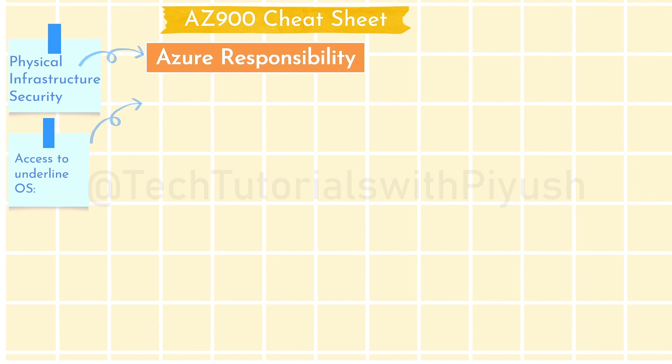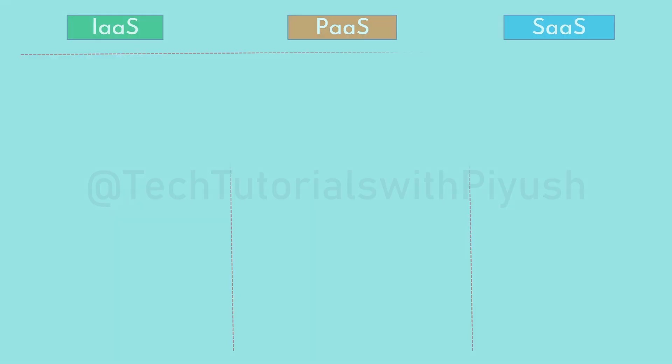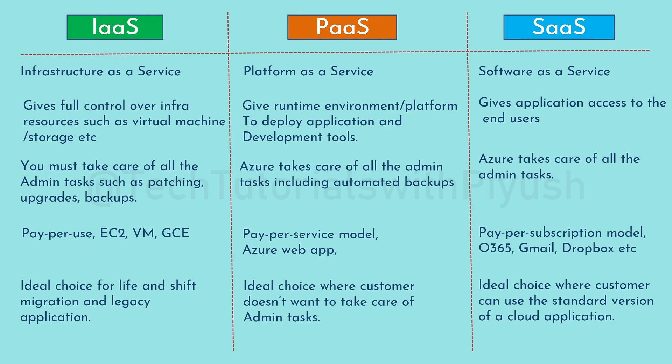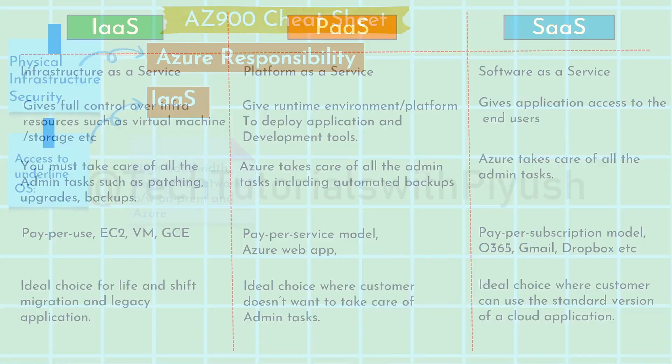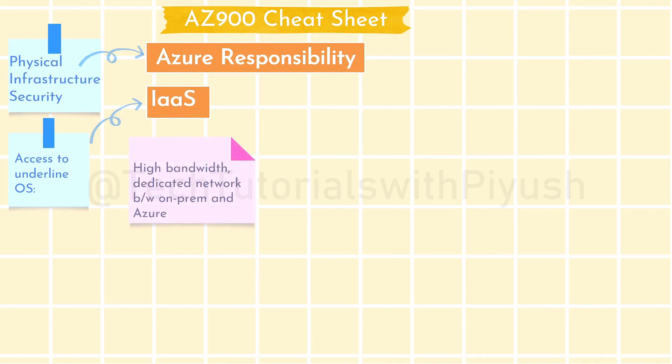When it comes to access to the underlying operating system, only in IaaS — Infrastructure as a Service — will you get access to the underlying OS. In PaaS and SaaS you won't get that access. The full comparison is shown here; you can take a screenshot and read through it, or watch the dedicated video in the AZ-900 playlist where everything is described in detail.